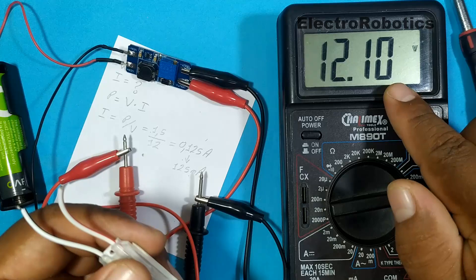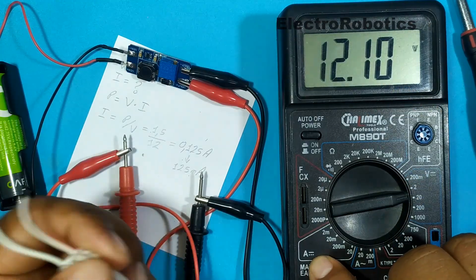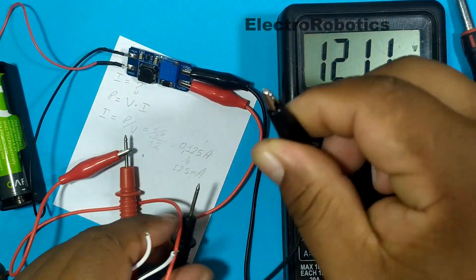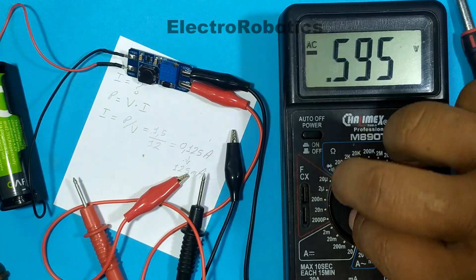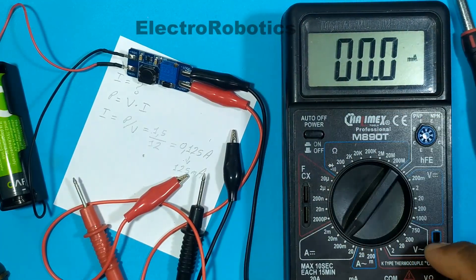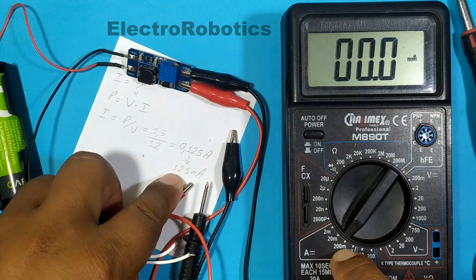To do this, we need to put our multimeter in direct current. We disconnect the alligators and we make the change. Range of 200 milliamps or greater than calculated.